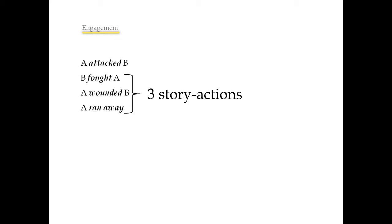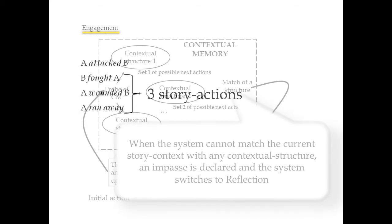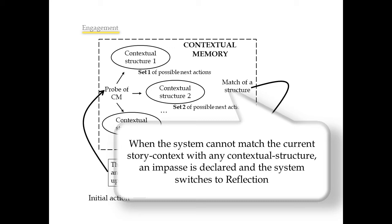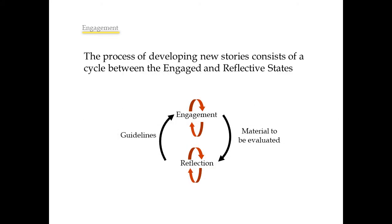This is a parameter that can be modified by the user of the system. Engagement may also stop when the system cannot match the current story context with any contextual structure. In this case, an impasse is declared and the system switches to reflection in order to try to break the impasse.